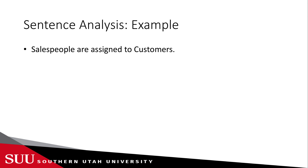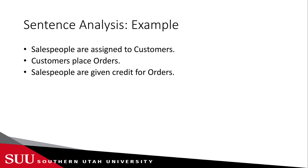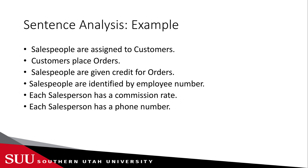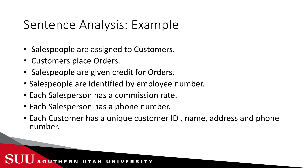We have the following sentences: 'Salespeople are assigned to customers. Customers place orders. Salespeople are given credit for orders. Salespeople are identified by employee number. Each salesperson has a commission rate. Each salesperson has a phone number. Each customer has a unique customer ID, name, address, and phone number. Orders are identified by order number.'